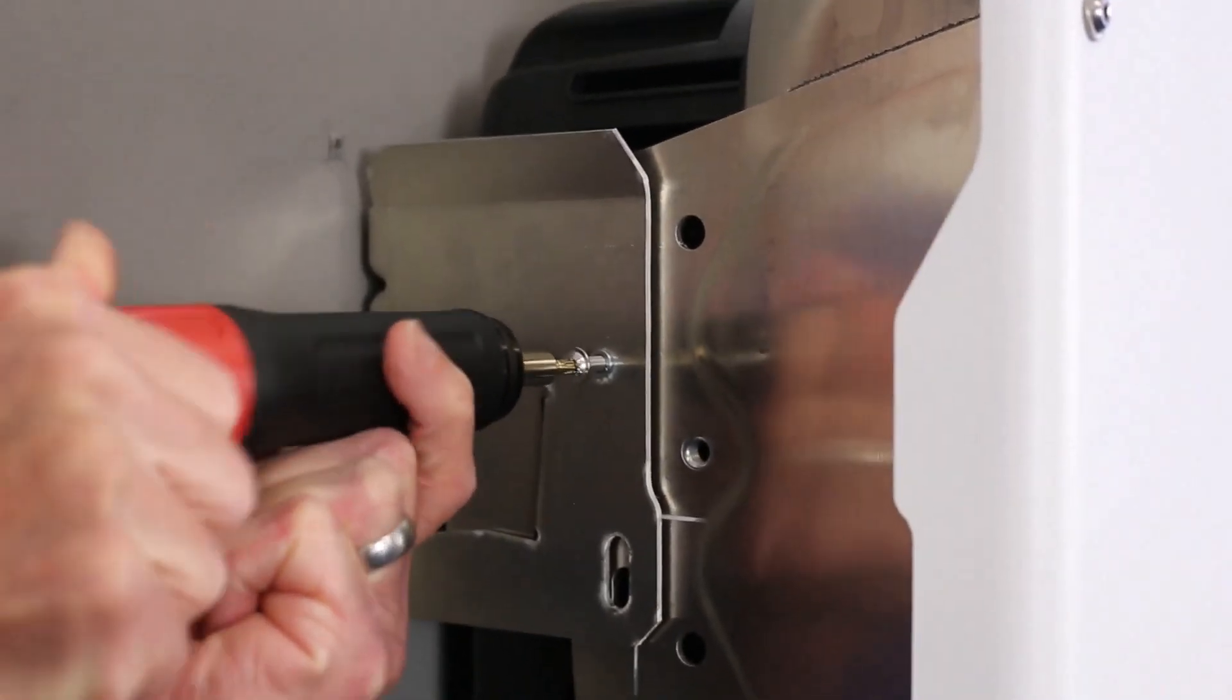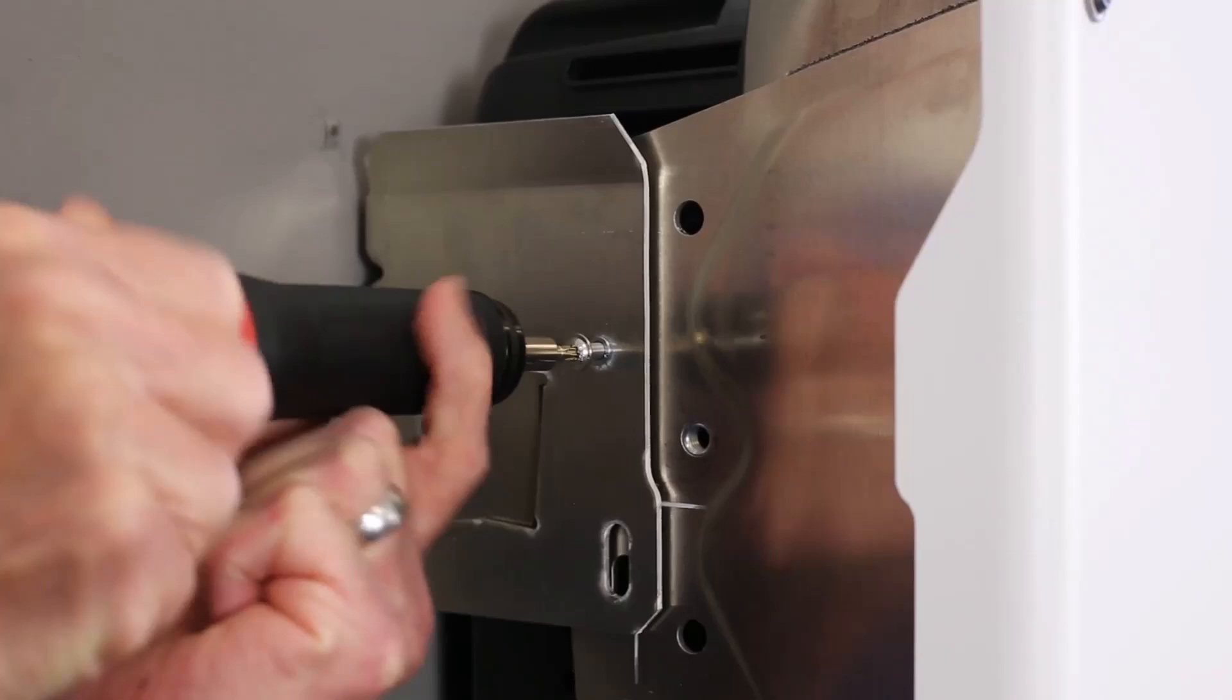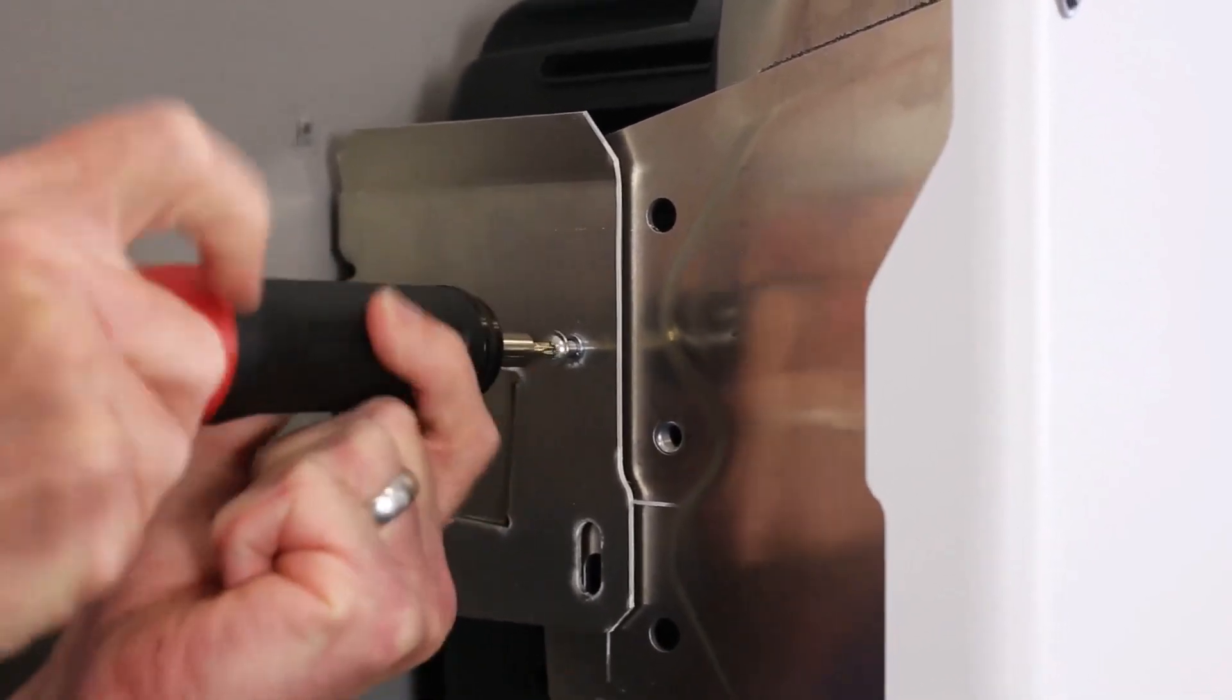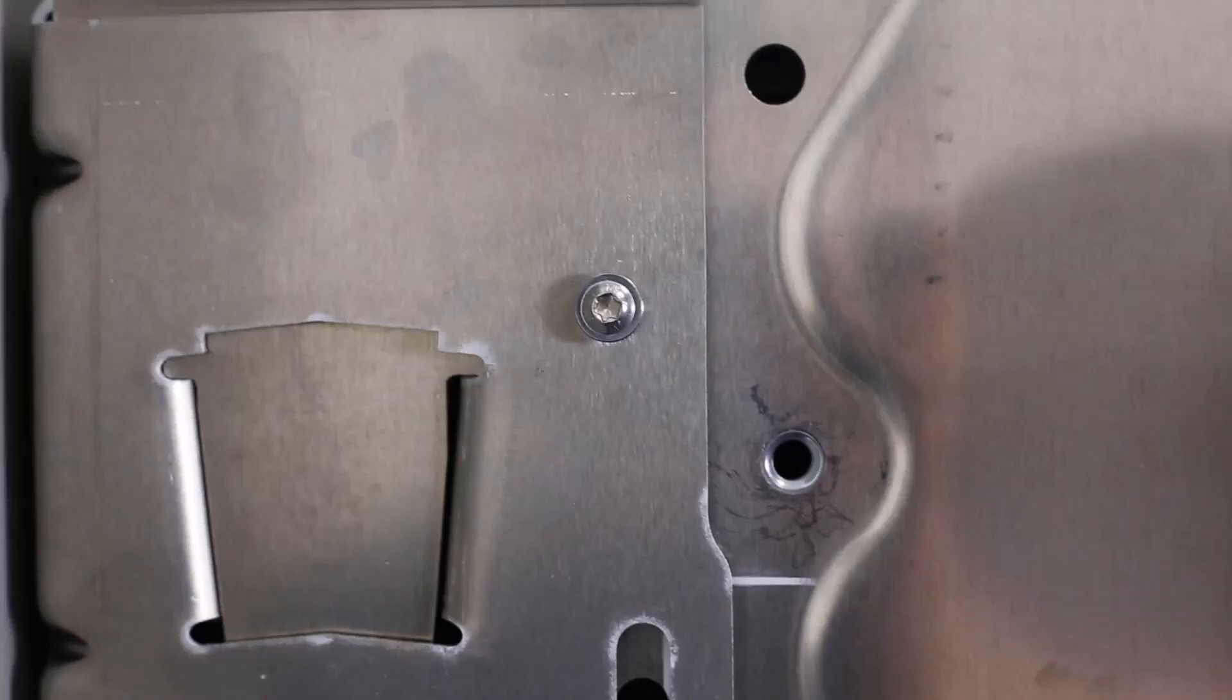Using a Torx spec of 13.3 inch pounds, secure the inverter to the bracket using the two included M5 x 14 screws on each side.